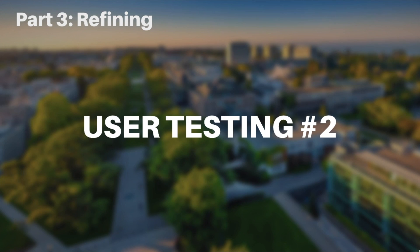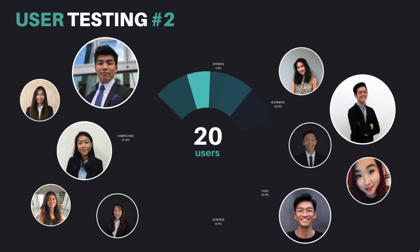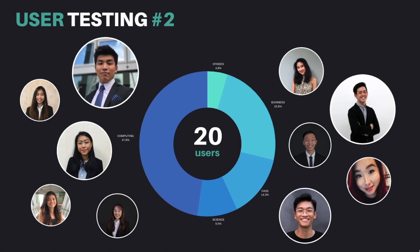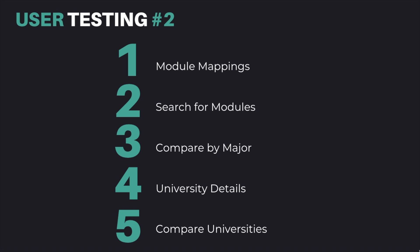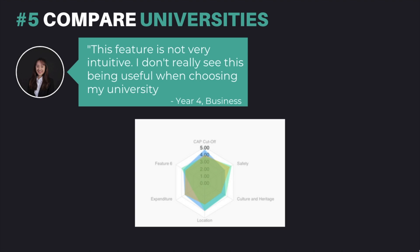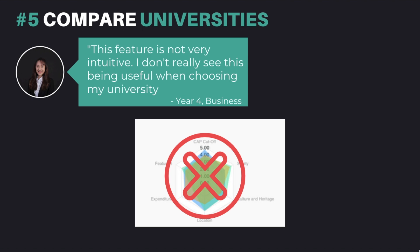Moving on to our refining stage, using our deployed app we brought it to our users for a third round of user testing. In this round, we asked users what they liked and disliked about each feature and asked them to rank our features according to their level of importance. Users' feedback indicated that the compare universities feature was too complex and did not value add to their decision-making process. Thus, in refining our features, we decided to drop the compare universities feature from our application.